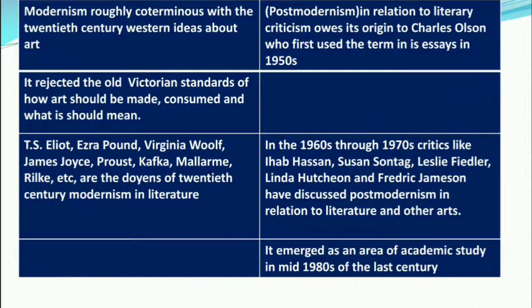Modernism is roughly co-terminous with 20th century western ideas about art. It is the movement in visual arts, music, literature, and drama which rejected the old Victorian standards of how art should be made, consumed, and what it means. The stalwarts of modernism in literature endeavored to redefine what poetry and fiction could be and do. T.S. Eliot, Ezra Pound, Virginia Woolf, James Joyce, Proust, Kafka, Malamud, Rilke, etc. are the doyens of 20th century modernism in literature.